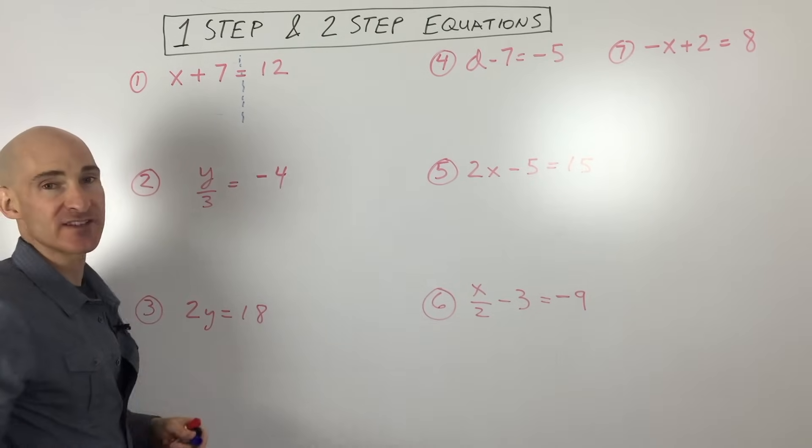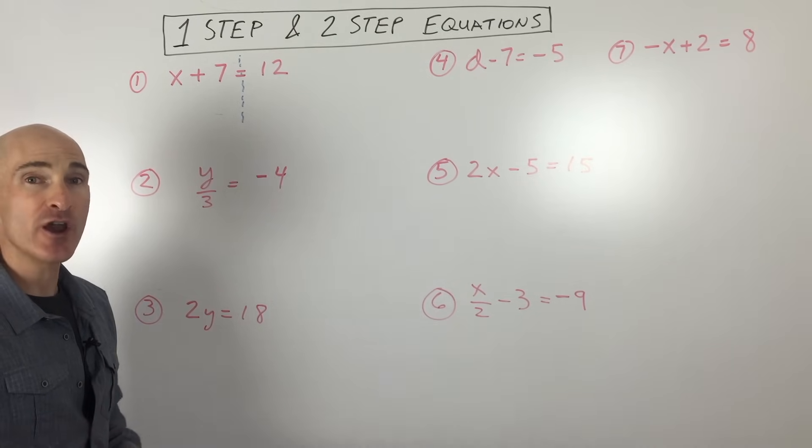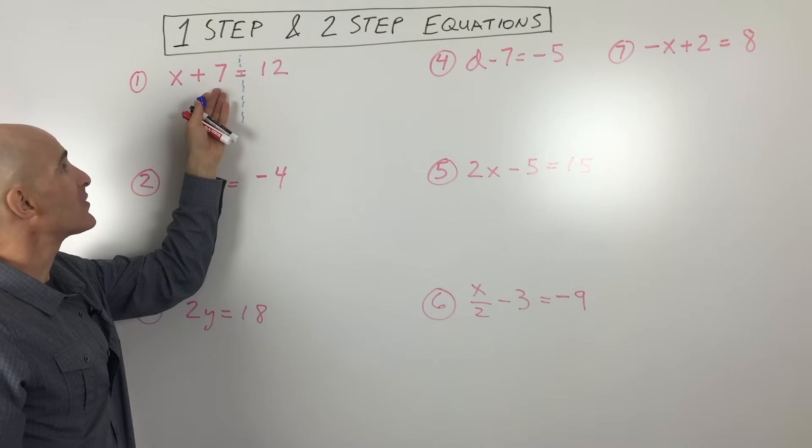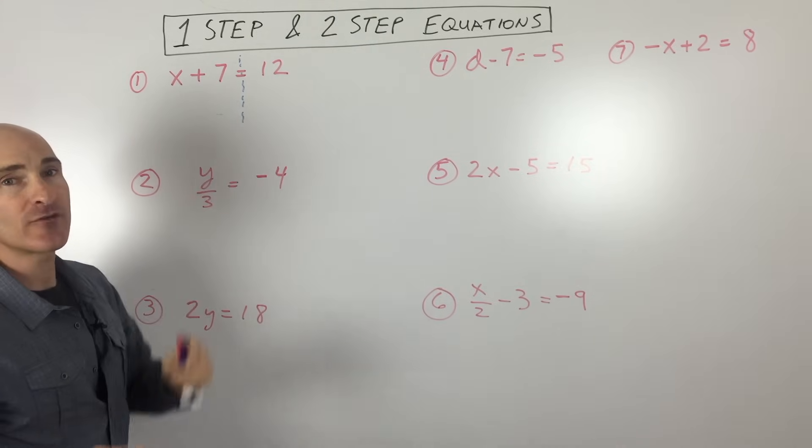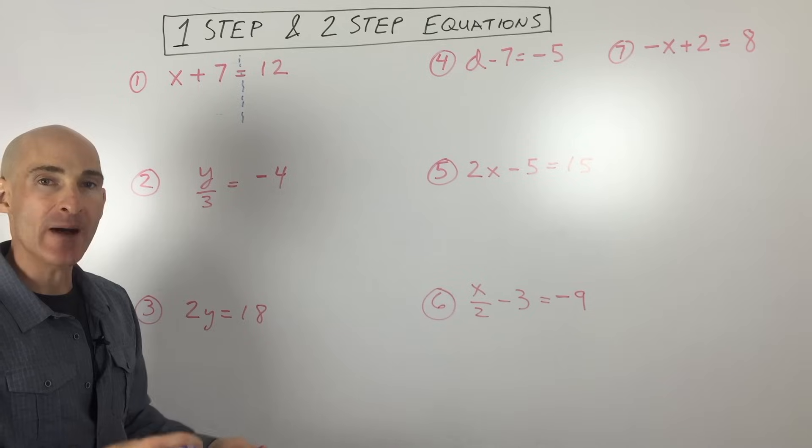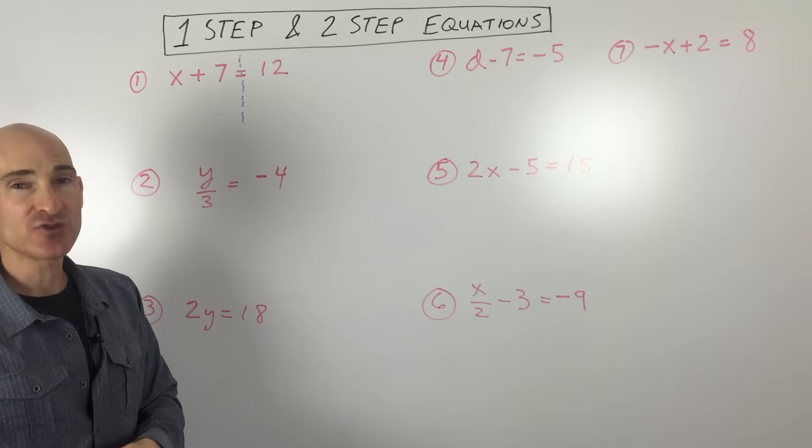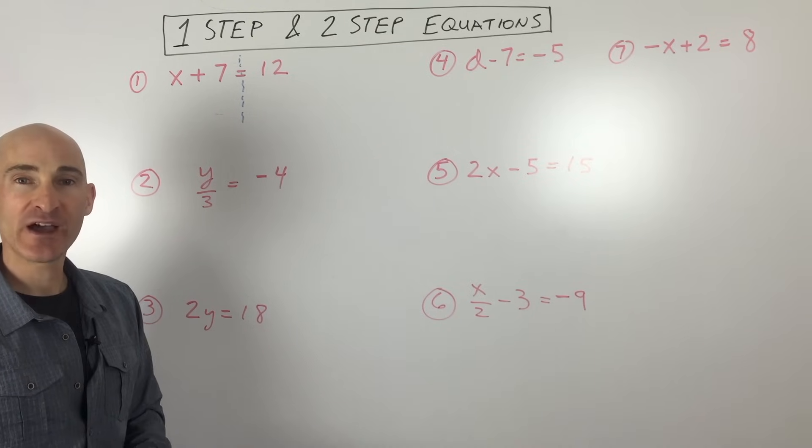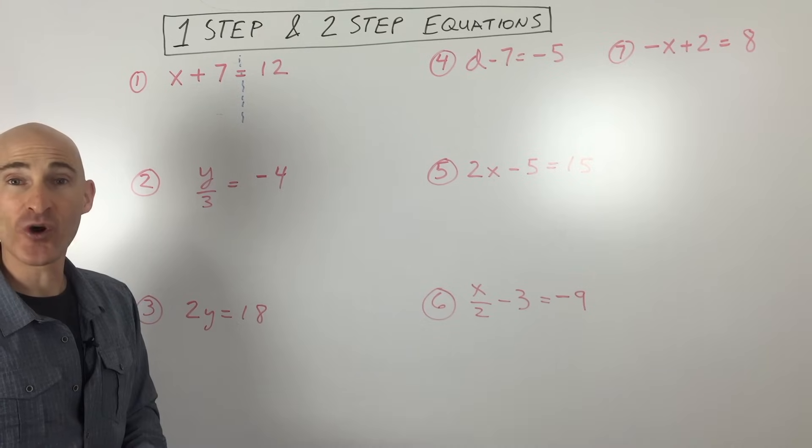We want to get our variable by itself. That's our mystery number, our unknown. And to do that, we have to get rid of the 7. Now, whenever you want to get rid of something, you want to do the opposite. So if you're adding, you want to subtract. If you're subtracting, you want to add. If you multiply, you divide. If you divide, you multiply, and so on.